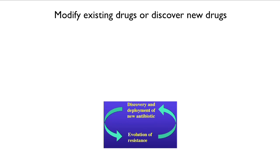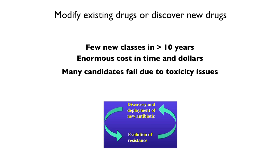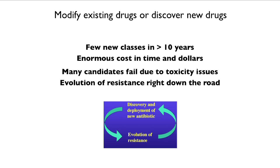We can modify drugs or discover new drugs, but that gets us back onto the drug treadmill. There are very few new classes of drugs that have been discovered in the last decade. Drug discovery costs an enormous amount in time and dollars — many candidates fail because they're actually toxic to the patient — and as soon as we release them, resistance evolves fairly quickly. So although this is a standard big-pharma approach, it is a strategy that seems to be failing.